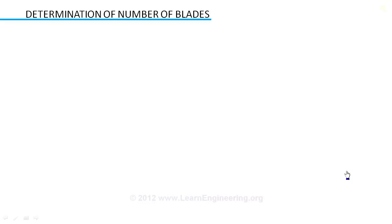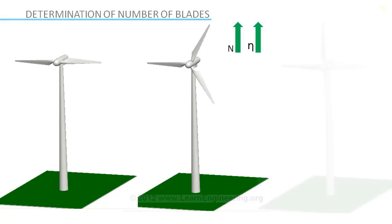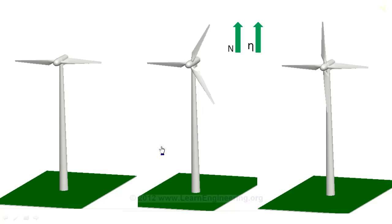As number of blades on wind turbine increases, aerodynamic efficiency increases, but in a diminishing manner. When we move from 2 blades to 3 blades design there is an increase in efficiency of 3%.